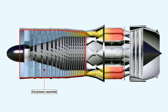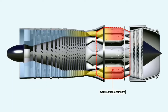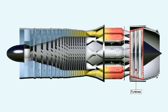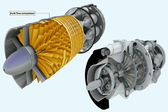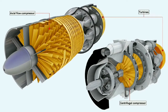To increase the efficiency of the gas turbine engine, the air being fed into it must be compressed before fuel is added, burnt in the combustion chambers, and subsequently expanded in the turbines. There are two types of compressor currently in use: one allows axial airflow through the engine, while the other creates centrifugal flow. In each case, the compressors are driven by a turbine coupled to the compressor by a shaft.